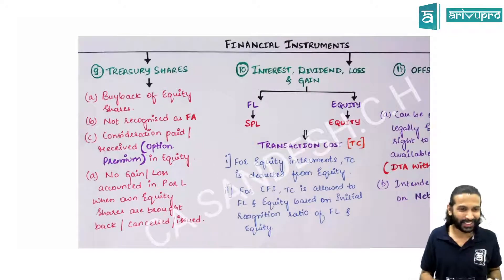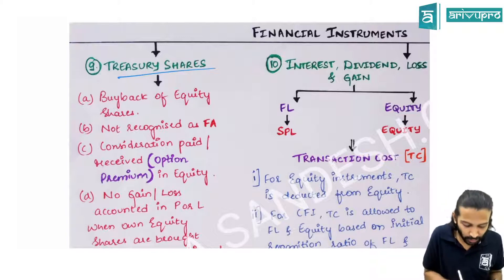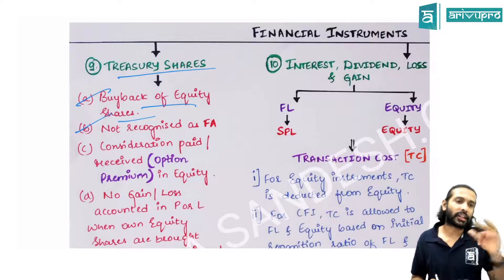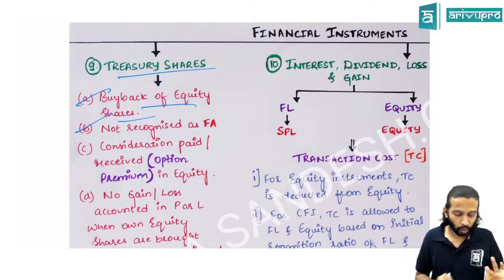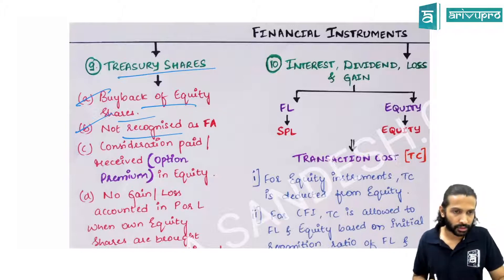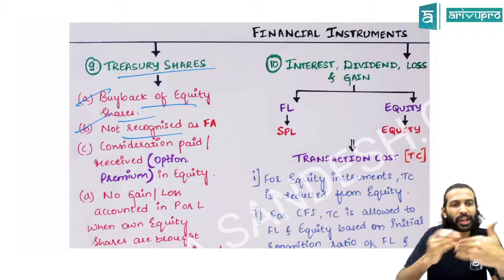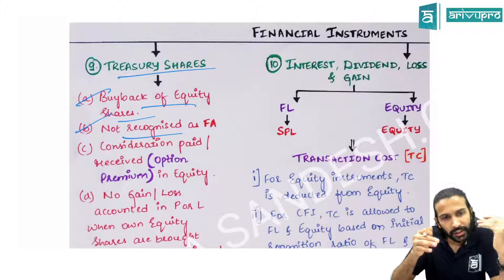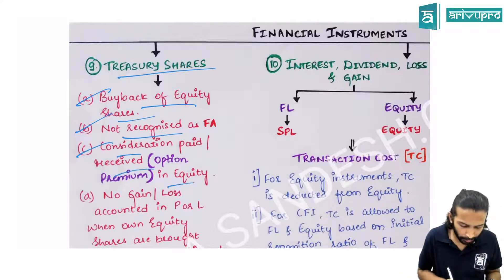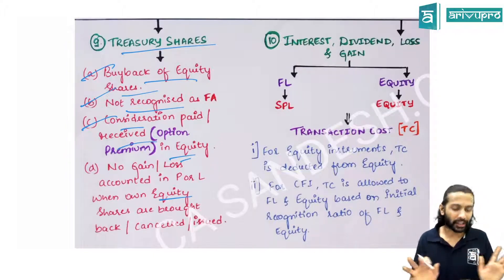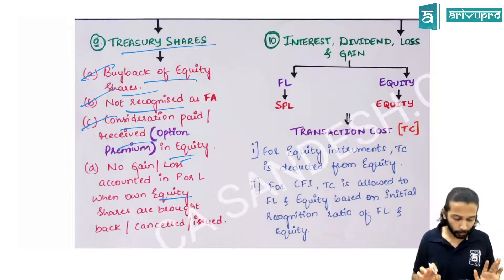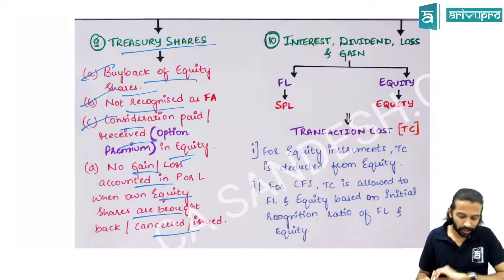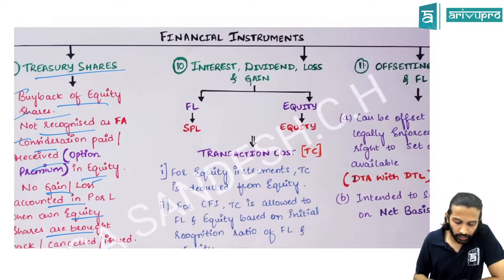Treasury shares refer to buyback accounting — buying your own shares back. Your own shares can never be shown as a financial asset. All adjustments are between the company and its shareholders and relate to equity. Every adjustment — consideration received, premium, etc. — is done through equity only. No gain or loss is recognized in P&L when own equity shares are bought back.